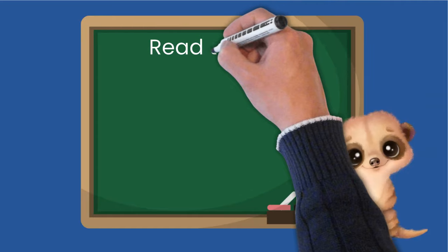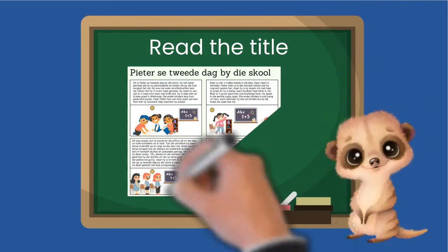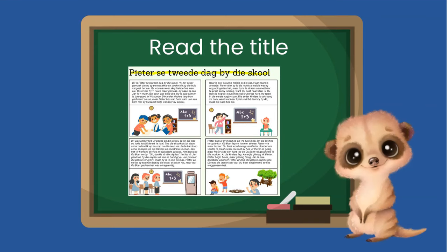It is always good to read the title of the story first. This often gives you key information about the text. The title of this story is Peter's second day at school, which tells you that the story is about a boy named Peter who is at school, and it's his second day.